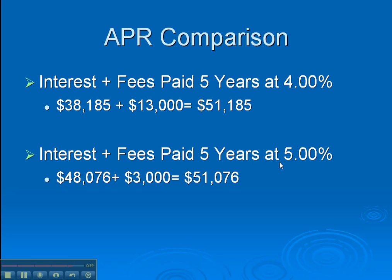So if you were to sell at 2, 3, or 4 years, or refinance, you're actually better off in terms of fees and cost of money on the 5% loan, not the 4% loan. Keep all this in mind when you're shopping loan-to-loan and take APR with a grain of salt. Hope that helps — thank you.